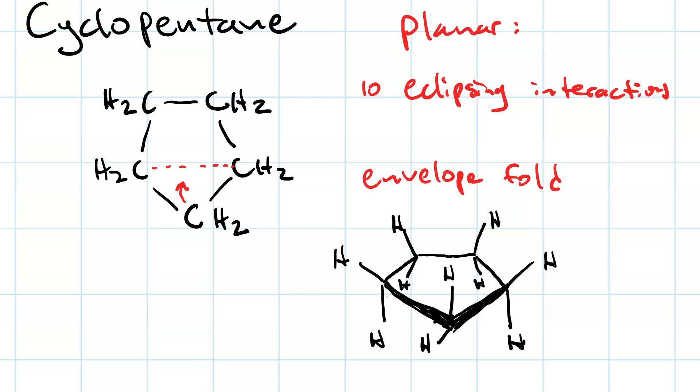However, we still have an eclipsing interaction here and one here, so we get two eclipsing interactions—a lot less torsional strain. As far as angle strain goes, the internal angle of a regular pentagon is 108 degrees, so we're pretty close to ideal, and making that envelope fold doesn't change the angles all that much.